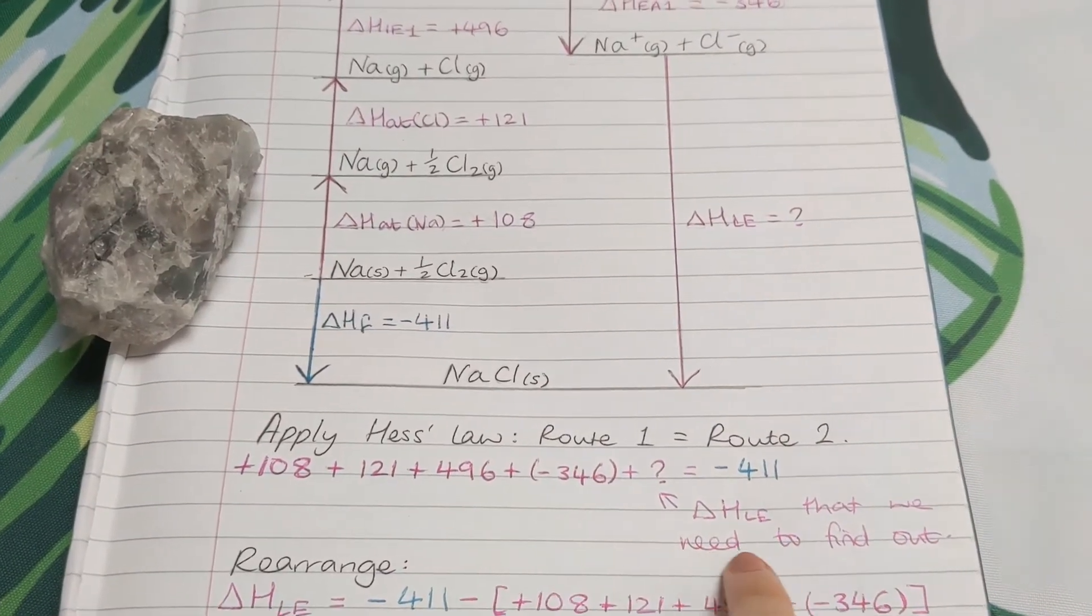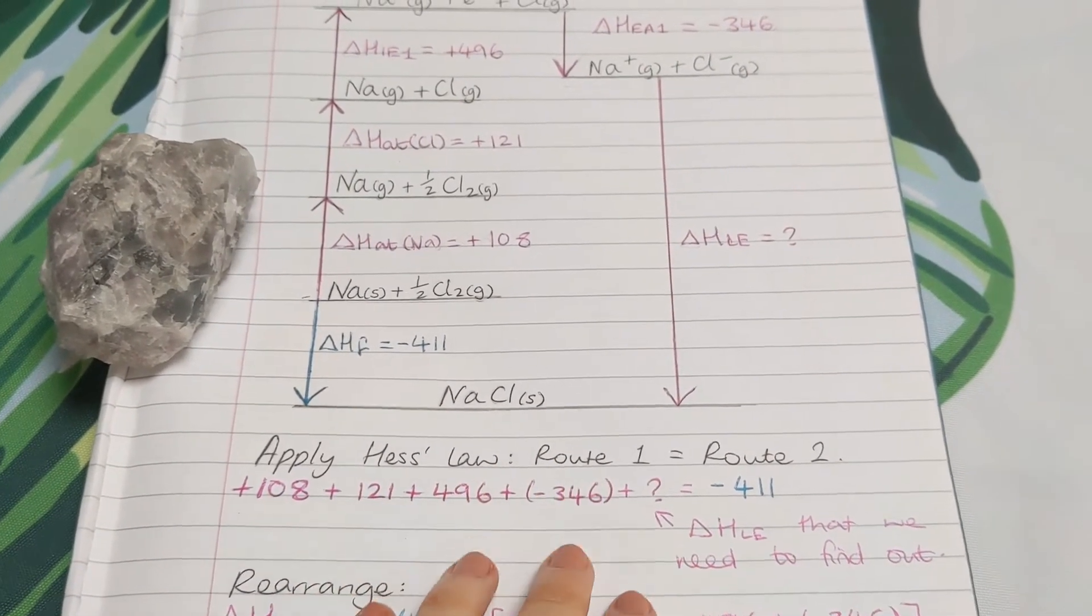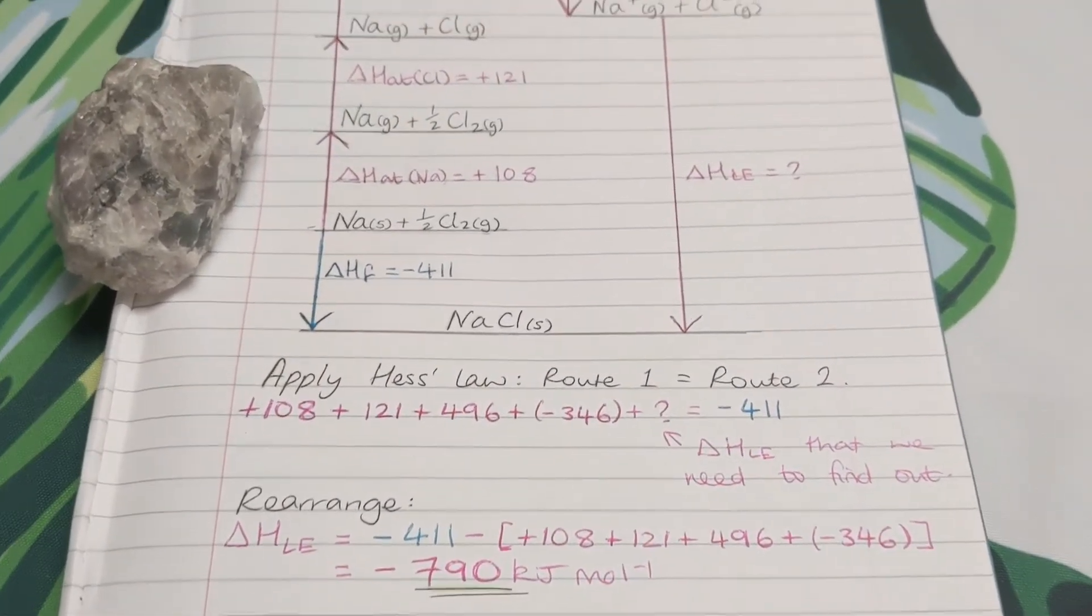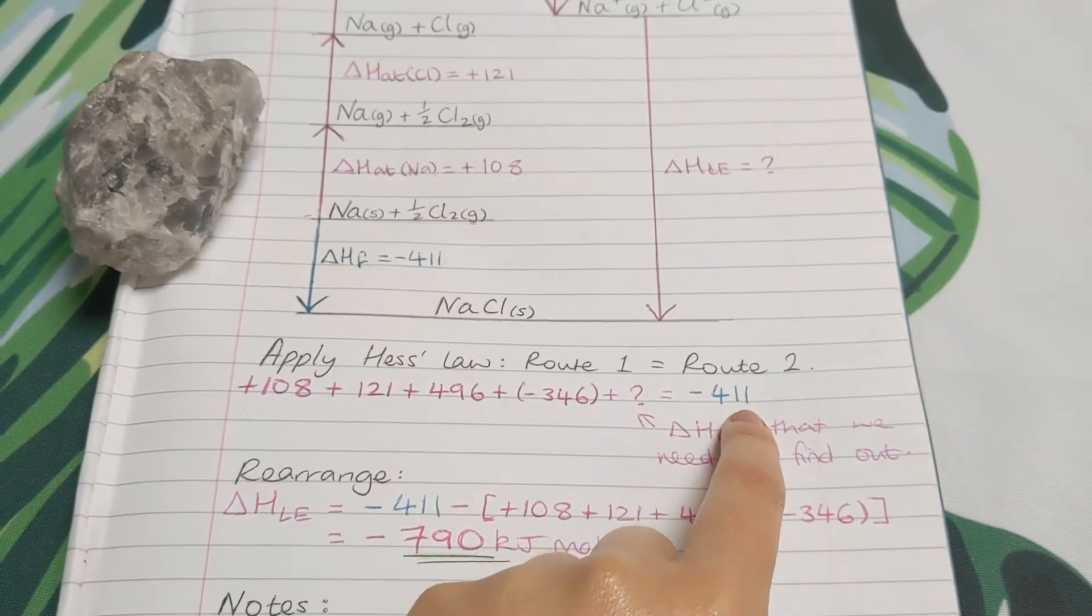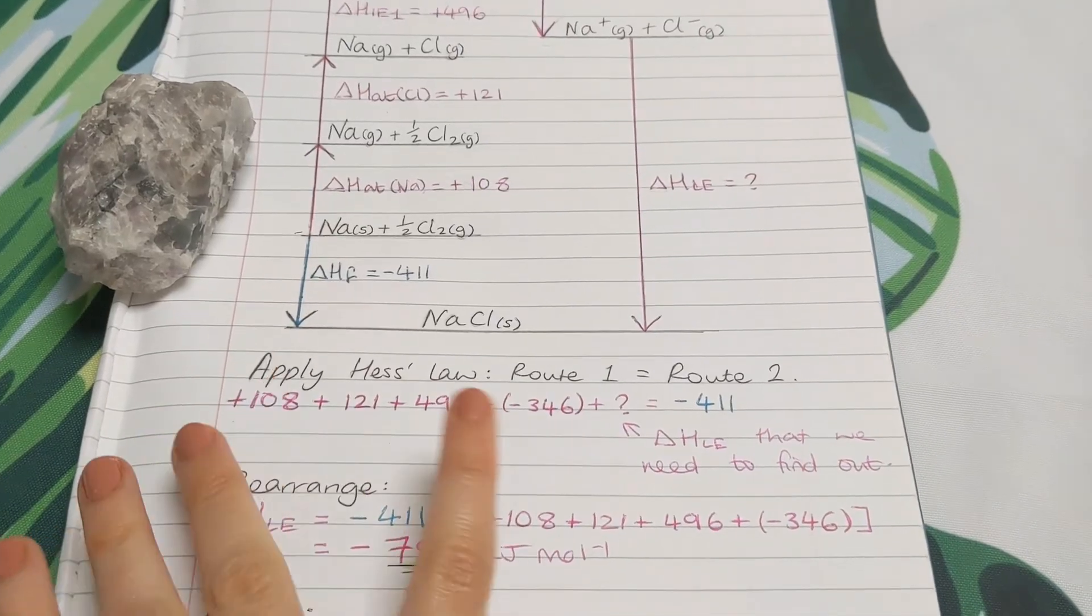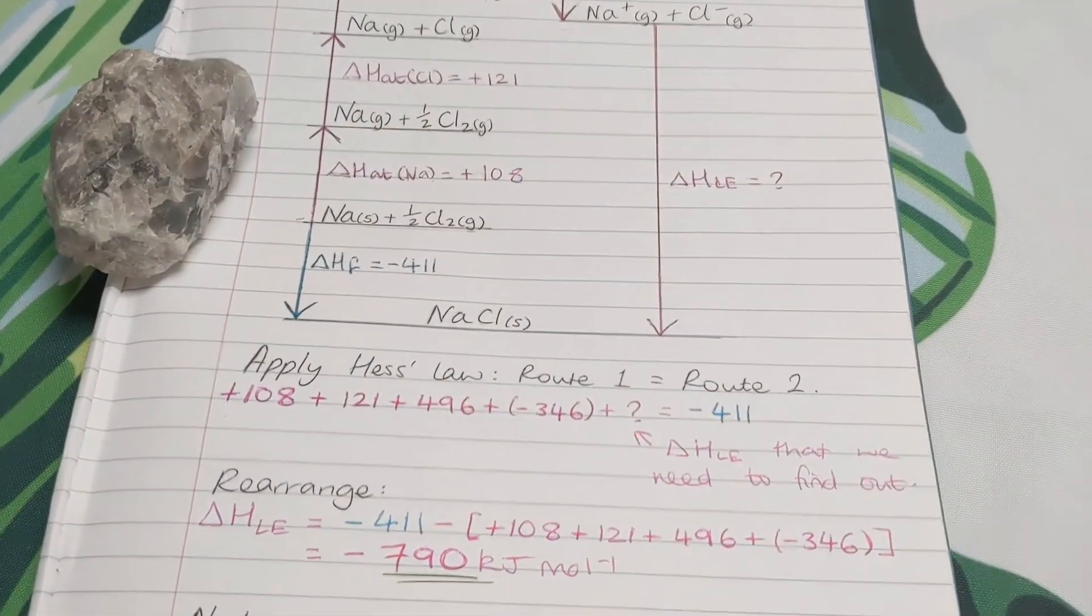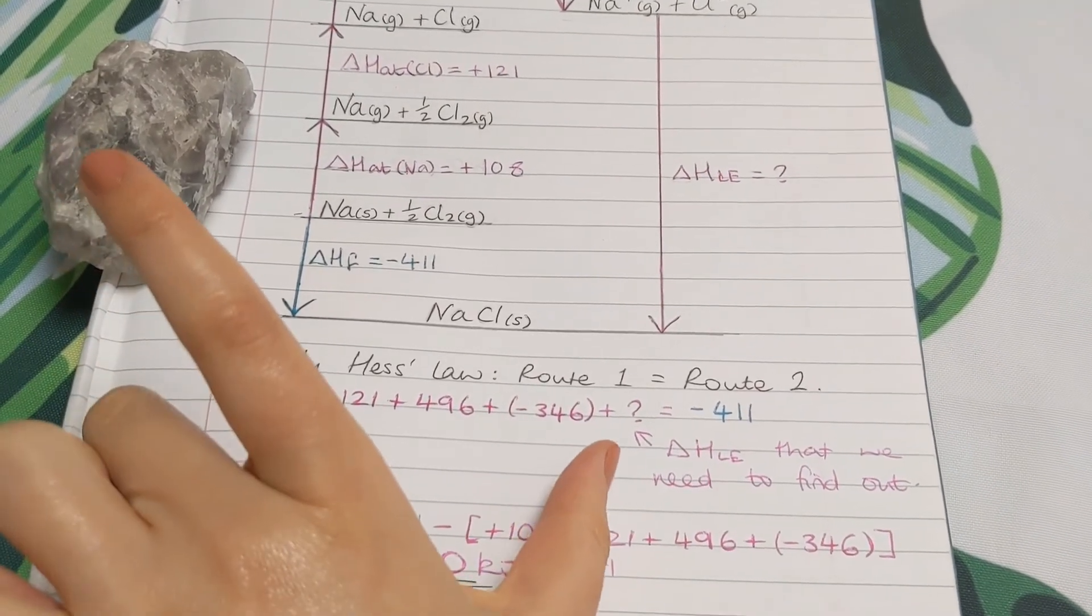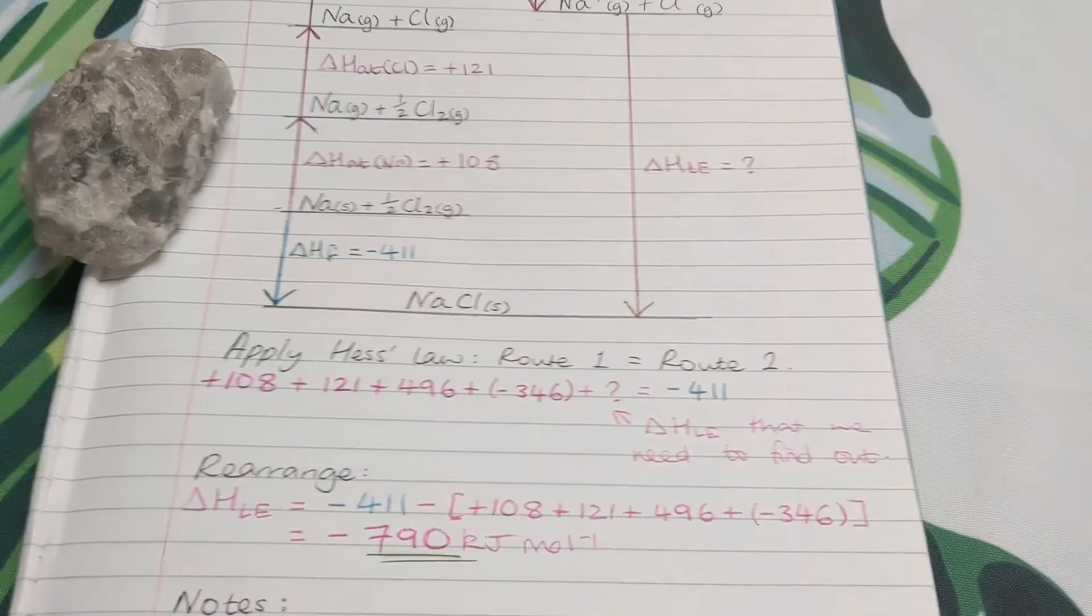So this is the lattice enthalpy that we need to work out for sodium chloride. And then what we do next is write out this equation, but rearrange it in terms of what we need to find out. Okay, so rearranging this, this question mark, lattice enthalpy, so that is equal to minus 411. So I've kept these on the sides they were previously. And I've moved this big long term over here. So I've moved that over there. When we change sides, we change sign. So now all this big term becomes negative. Change sides, change signs. And then I've collected it all up like this.